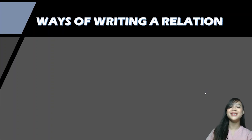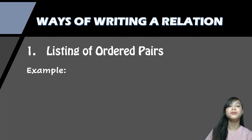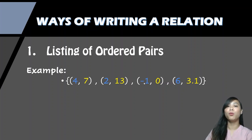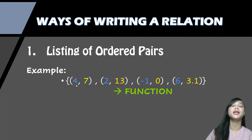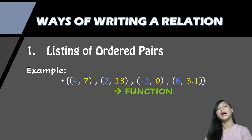There are different ways of writing a relation. First, we have the listing of ordered pairs. For example: (4, 7), (2, 13), (negative 1, 0), (6, 3), (1). These ordered pairs are an example of a function because each element in x corresponds to exactly one value of y.